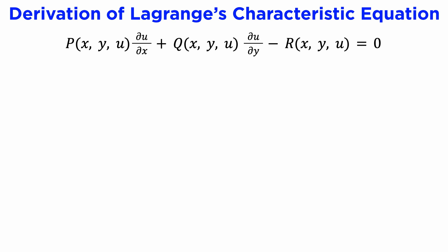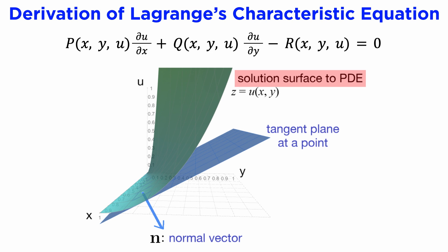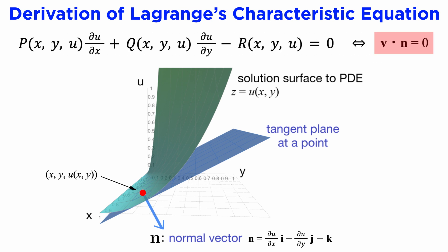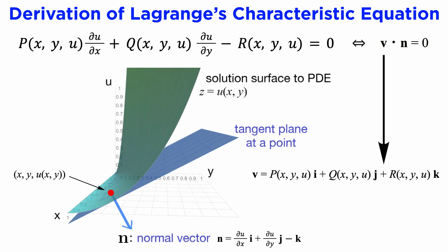There is an interpretation of why Lagrange's method works using concepts from multivariable calculus. If we consider the solution to our original quasi-linear PDE as a curved surface in 3D Cartesian coordinates with x, y, and u as the third axis, then we know that the surface normal vector to the surface u(x,y) is given by (∂u/∂x)i + (∂u/∂y)j − k, where i, j, and k are the orthonormal basis vectors along the x, y, and u axes, and we can think of this as a 3D normal vector field n. Next, we can easily write our PDE in the form v · n = 0, where v is another 3D vector field defined by Pi + Qj + Rk.